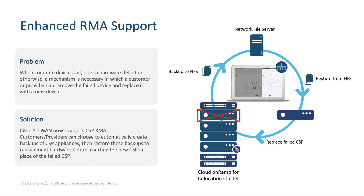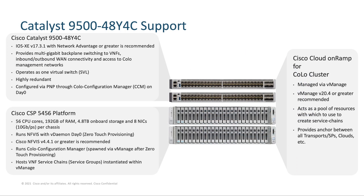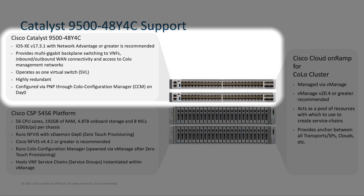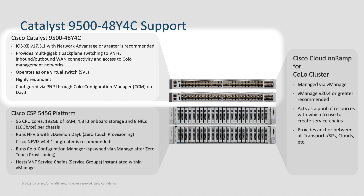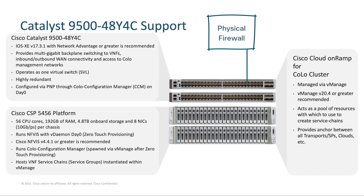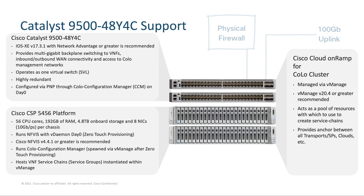But all this compute doesn't amount to much when you don't have a way of delivering traffic to and from the CSPs at scale. For that, Cloud OnRamp for Colocation is now leveraging the Catalyst 9500 48Y4C. This switch increases the port density of the solution for things like inserting a physical appliance into your service chains, but more importantly, provides uplink options that are on the order of 100 gigabits per second. With this kind of throughput and compute, customers and MSPs will be well positioned to virtualize any appliance of their choosing with the assurance that the hardware underneath can support the high bandwidth they desire.